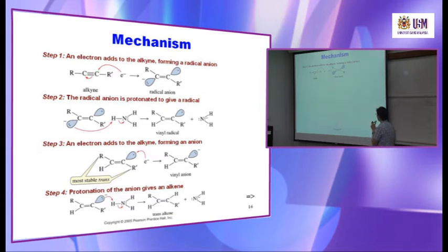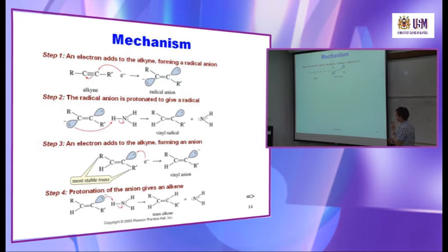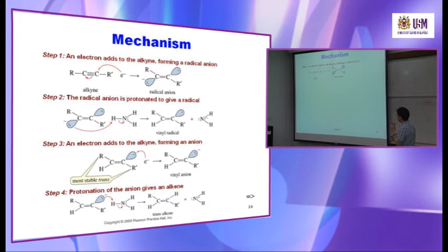In step one, the electron attacks the carbon, breaking the pi bond via heterolytic cleavage — two electrons are donated. The carbon now has two electrons. In the exam you don't need to draw the orbital; just show the key features. You have an electron shown with a single arrow attacking the carbon, and the pi bond breaks with a double arrow.